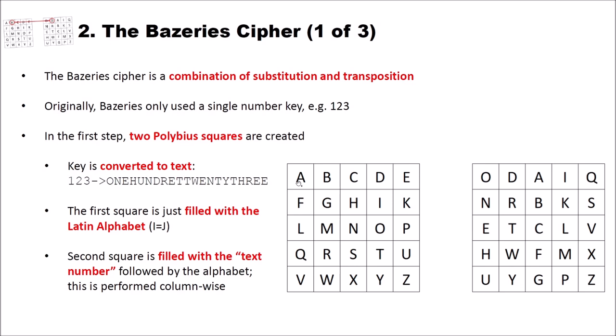And the second square is filled with the text number that we previously created based on our number key, followed by the alphabet. And this time this is performed column wise. And of course, if we already used a letter, we omit it. For instance, we have here one two three. So O-N-E-H-U-D-R-T-W-Y. And then the remaining part of the alphabet, A, B, C and so on.